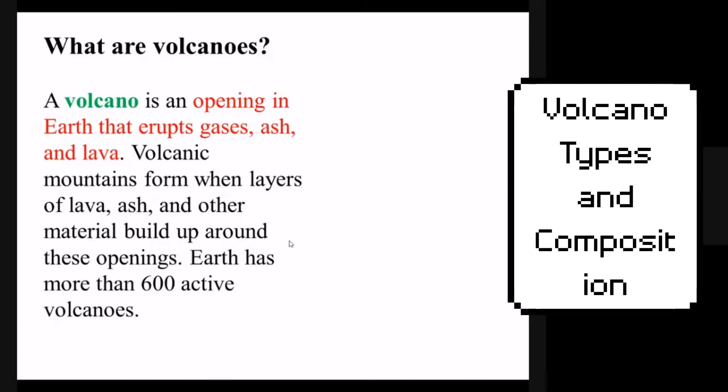This video will be about volcano types, what they are, and where they form on Earth. A volcano is an opening in the Earth that erupts gases, ash, and lava.